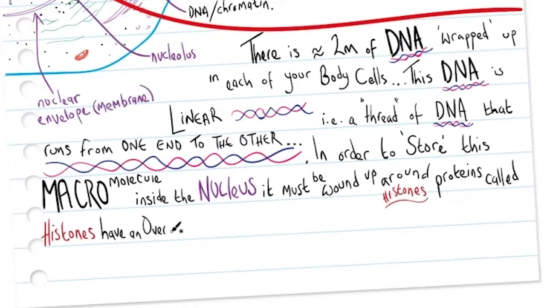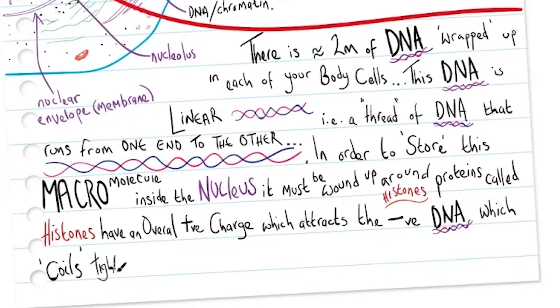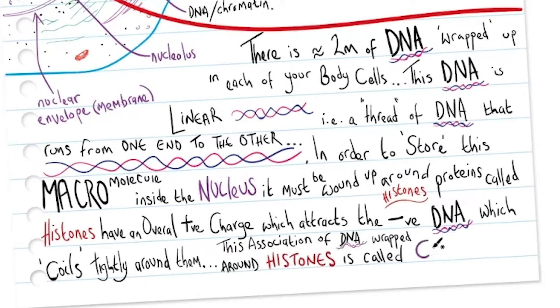Histones have an overall positive charge which attracts the negatively charged DNA, which coils tightly around them. And this association of DNA wrapped around histones is called chromatin.